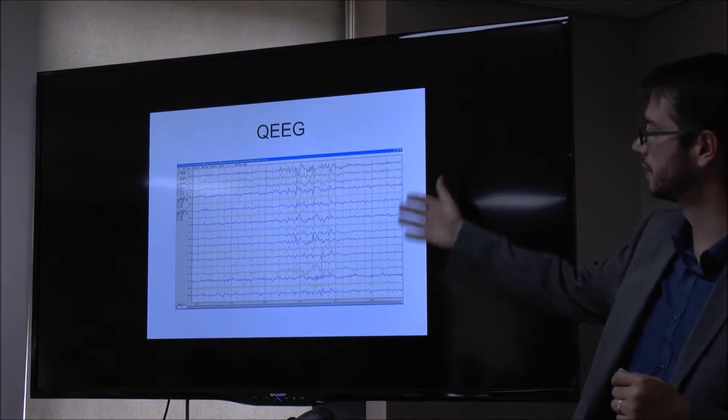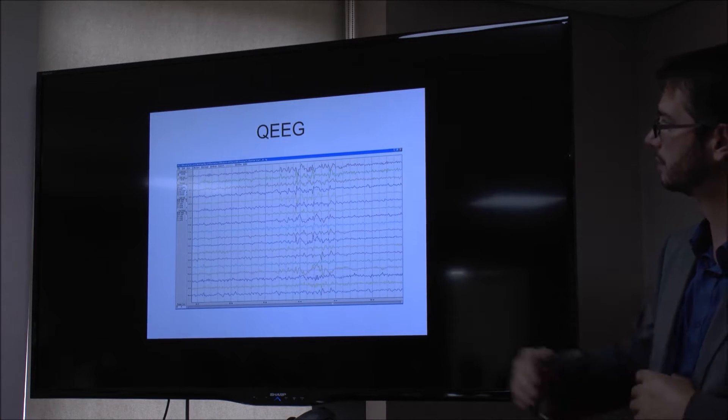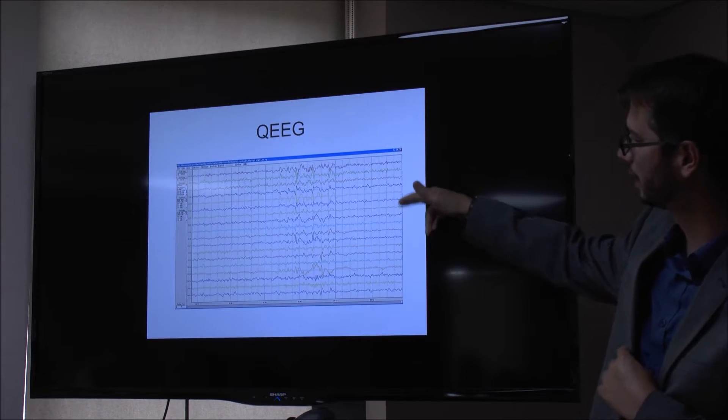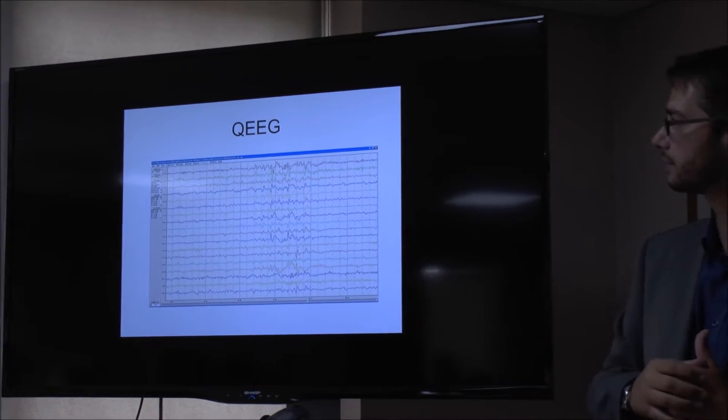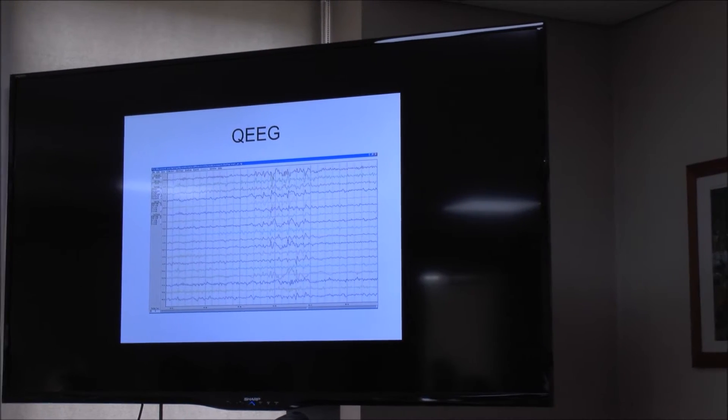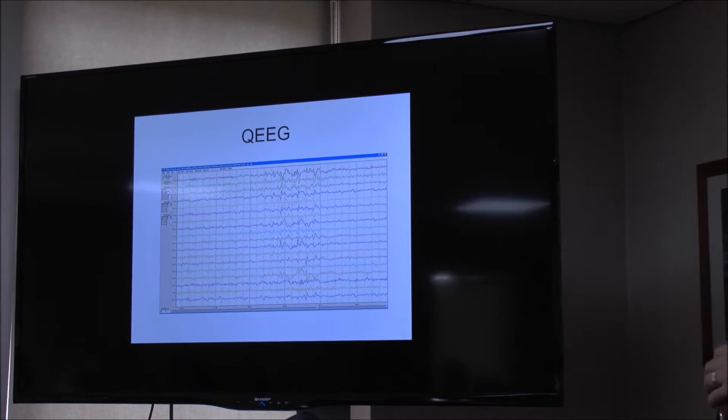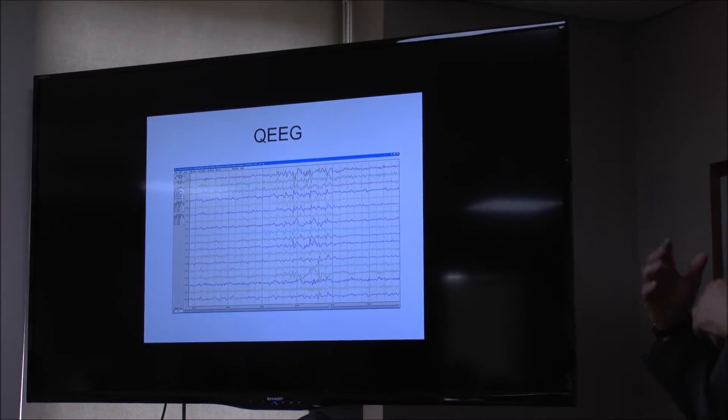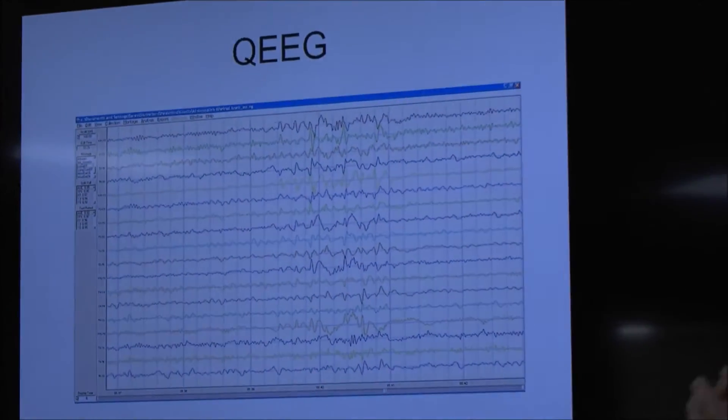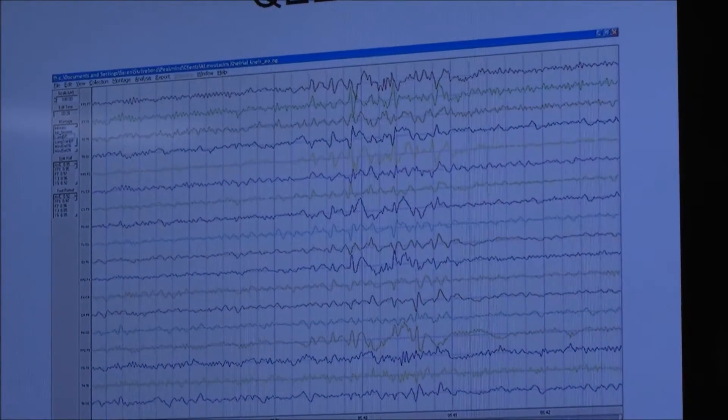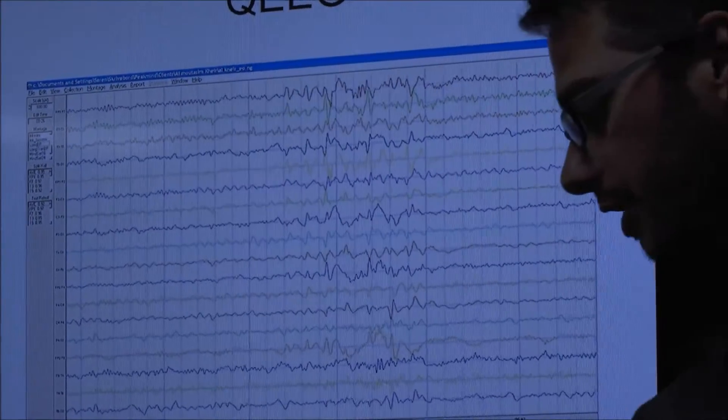This is just a screenshot of someone's brain activity with the 20 channels, so the 20 different electrodes there, different lines going across the screen. That's the raw data, so that's what we would then filter. We then analyze it, interpret it, write a report and so on. But that's what we look at on the screen.